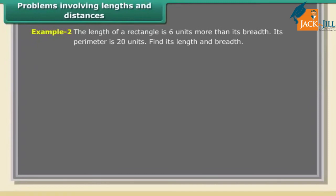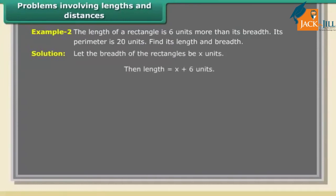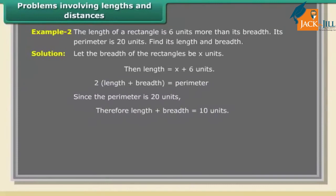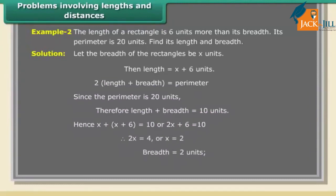Problems involving lengths and distances. Example 2: the length of a rectangle is 6 units more than its breadth. Its perimeter is 20 units. Find its length and breadth. Solution: let breadth be x units, so length = x + 6 units. Perimeter: 2(length + breadth) = 20, so length + breadth = 10. Thus x + x + 6 = 10, giving 2x = 4, x = 2. Breadth = 2 units, length = 8 units.